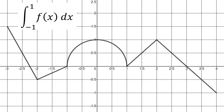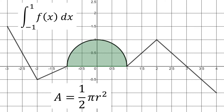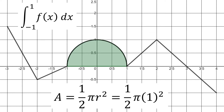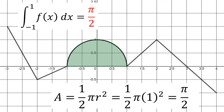The region bound by the function and the x-axis is shaded green because it's above the x-axis, which means it's ultimately going to be positive. We have a semicircle here. The area of a semicircle is one half pi r squared. The radius of this particular circle is one, so we have one half pi times one squared, which gives us pi over two. So the value of this integral is pi over two.